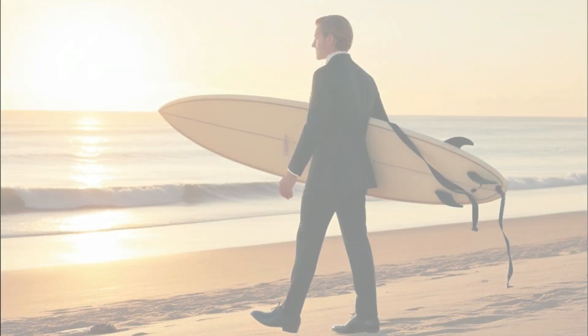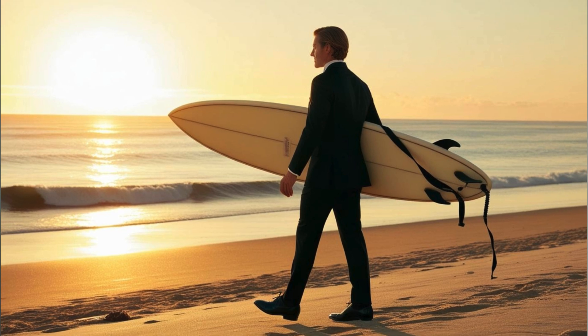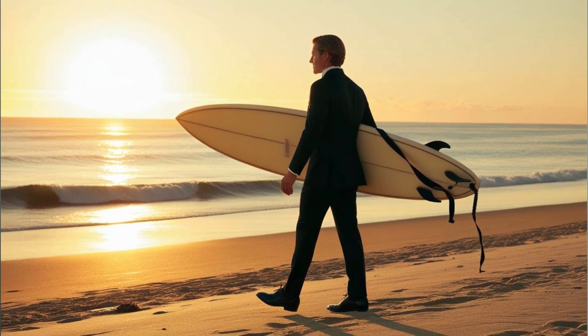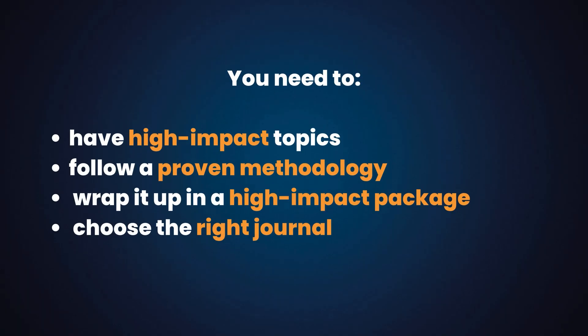That's why you have to match your paper — the outfit — to the right event, which is the journal. If you do this, you'll nicely fit in and make the right first impression on the editor. If you don't, you'll look out of place. So if you want to avoid the fate of 90% of papers and publish regularly in Q1 Scopus journals, you need high-impact topics, a proven methodology, a high-impact package, and the right publishing outlet for your paper.